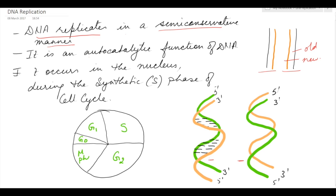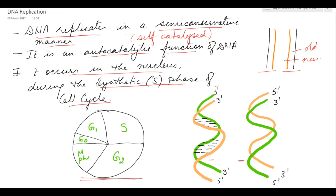DNA replication is an autocatalytic function of DNA, meaning it is self-catalyzed. It occurs in the nucleus during the S phase of the cell cycle. The cell cycle has the G1 stage, S, G2, and the divisional phase. G1, S, and G2 come under the interphase. So, it occurs in the synthetic phase of the cell cycle.